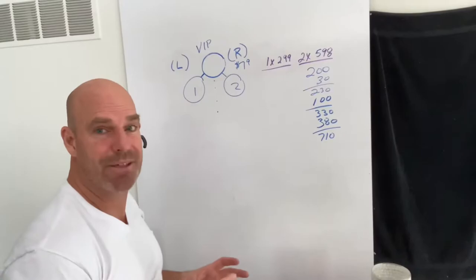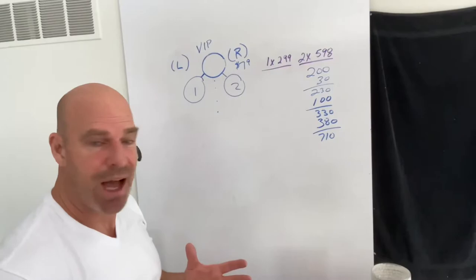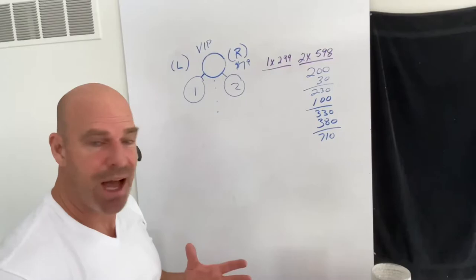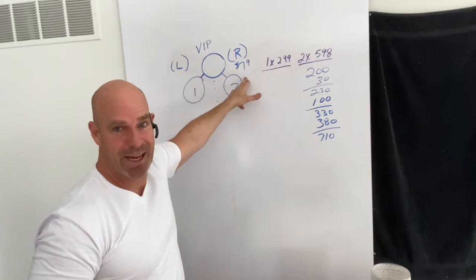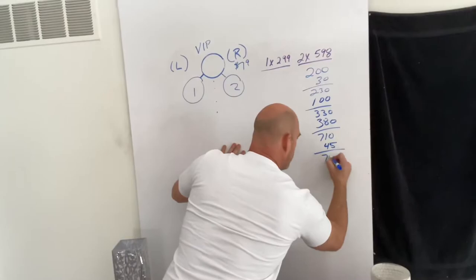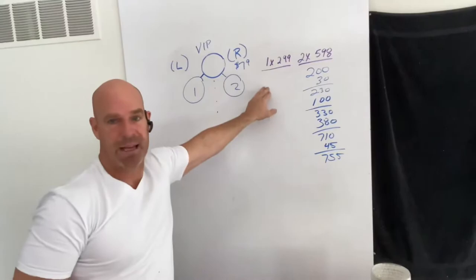We also get a credit voucher for $45 in our back office that gets applied to our auto ship because we have two customers. We're making the $30 because we get $15 per customer, plus the $45 credit voucher, that's $75, while auto ship is only $79 plus shipping and handling. So technically we're getting it almost free. The total that we've made in this scenario is $755.